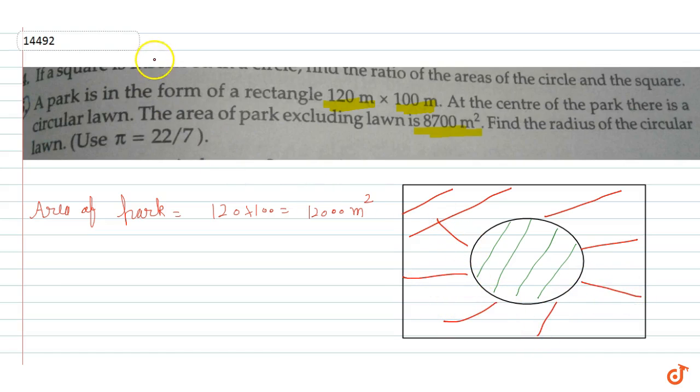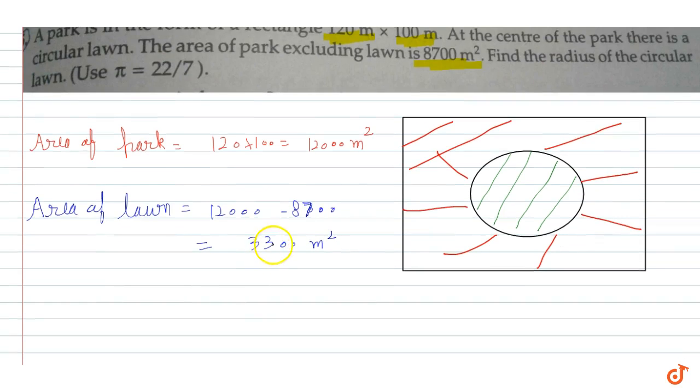Now if we have to calculate the circular lawn area - the area of lawn - what will it be? Area of lawn is equal to total park which was 12,000, minus the lawn excluded area which is 8700. So remaining area will be 12,000 minus 8700 which is equal to 3300 meter square. Now this is 3300 meter square, the area of lawn.